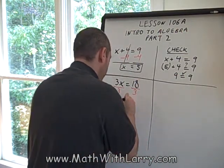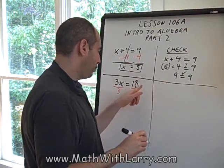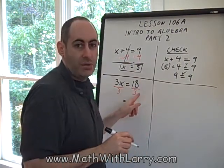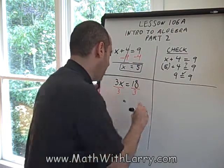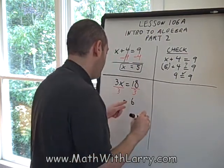Okay. On the right, we have 18 divided by 3. Make sure you remember, it's always top number divided by bottom number. 18 divided by 3 is 6. I bring down my equal sign.